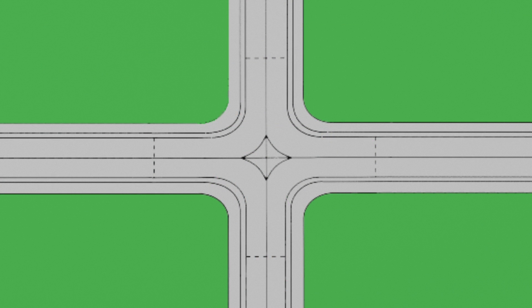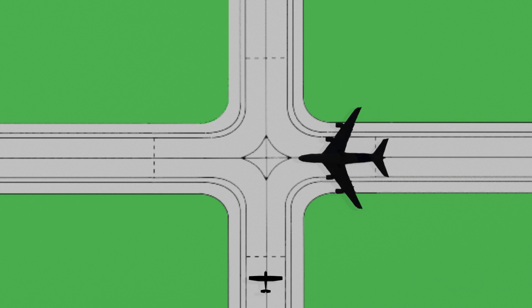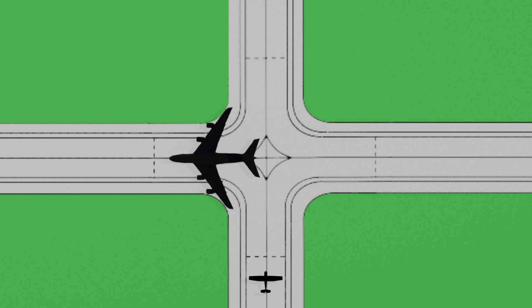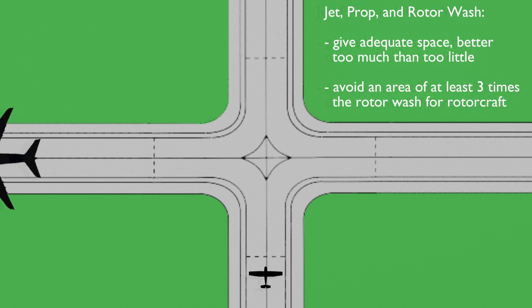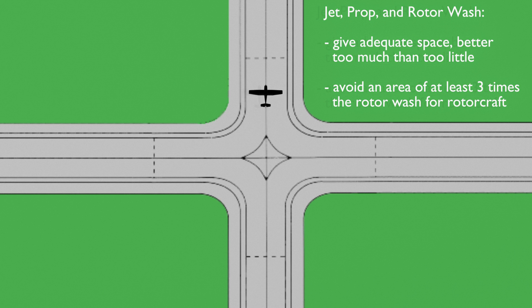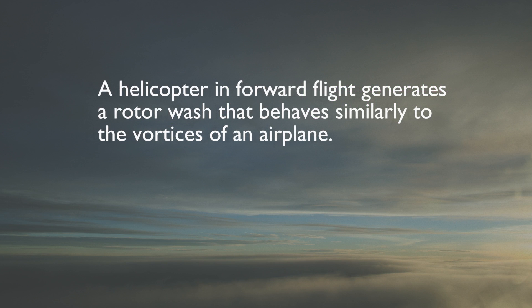Pilots of light aircraft also need to be cautious of jet wash, prop wash, and rotor wash. Make sure adequate space exists between you and airplanes and helicopters you are taxiing behind or around. For jet airplanes, this distance might be 500 to 1000 feet. For helicopters, three times the rotor diameter is generally considered to be the extent of the rotor wash. When a helicopter is in forward flight, it generates a trail of rotor wash that behaves similarly to the wingtip vortices of an airplane.